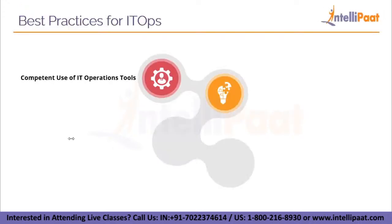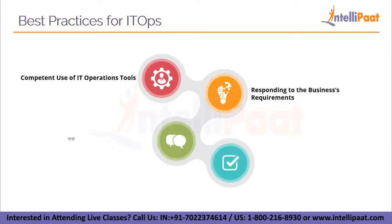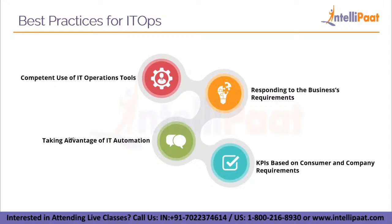Best practices of IT Ops. First, competent use of IT operation tools: teams should embrace new tools being integrated into the infrastructure and ensure all necessary skills for growth strategies are in place. Second, responding to business requirements: IT Ops must respond fast to business needs using a product-centric approach while eliminating traditional silos. Third, taking advantage of IT automation to eliminate low-value, time-consuming, and repetitive processes. Fourth, KPIs based on consumer and company requirements: metrics should be tailored to the demands of the company and its consumers, connecting all IT Ops efforts with the aims of business stakeholders.